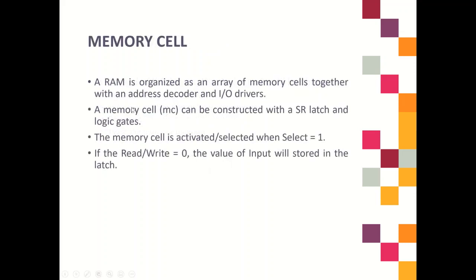Introduction of memory. RAM is organized as an array of memory cells together with an address decoder and input/output drivers. Each memory cell has its own address. Memory cells can be constructed using an SR Latch and logic gates. A memory cell will be activated or selected when the cell line is 1. We have two operations of memory: read and write, based on the value given to the read/write line.